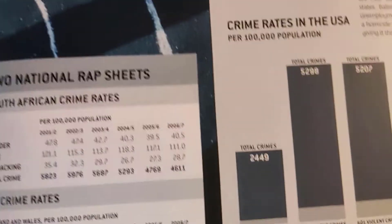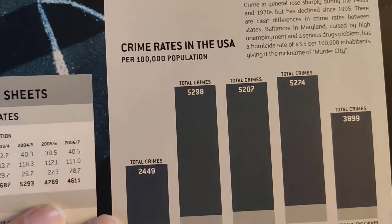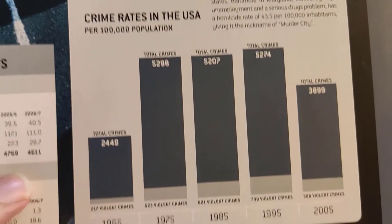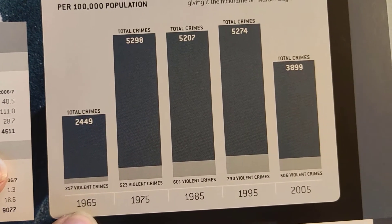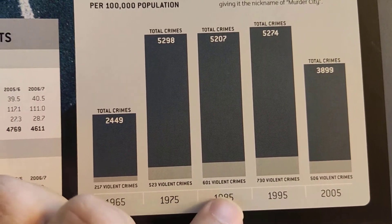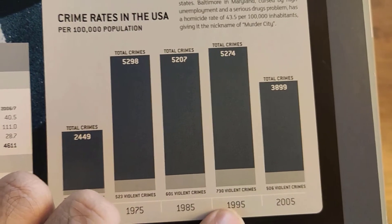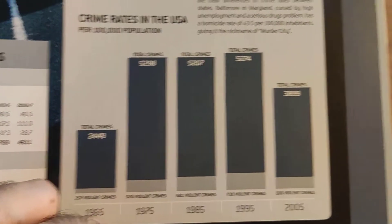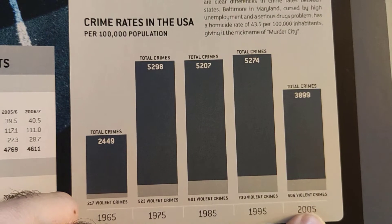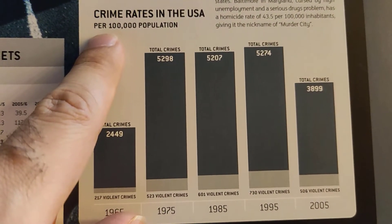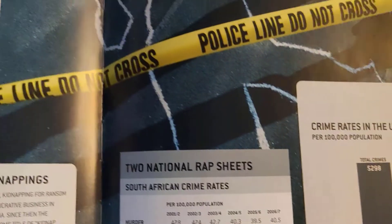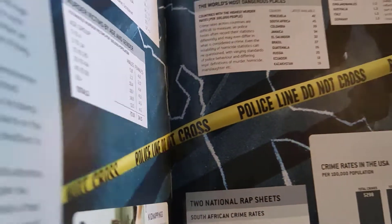Here is a bar chart showing crime rates in the USA — total crimes from 1965 through 1975, 1985, 1995, showing growth, and then a fall in 2005. Bear in mind this is per 100,000 population. It gives you a lot of statistics in the form of visuals and graphs.